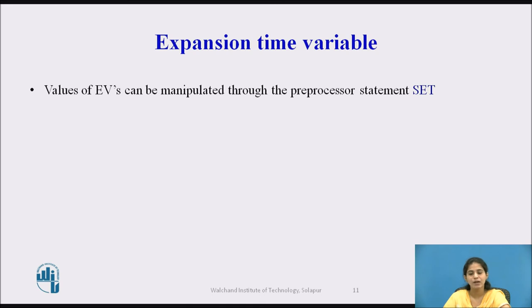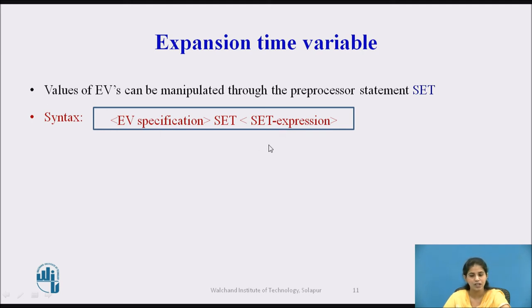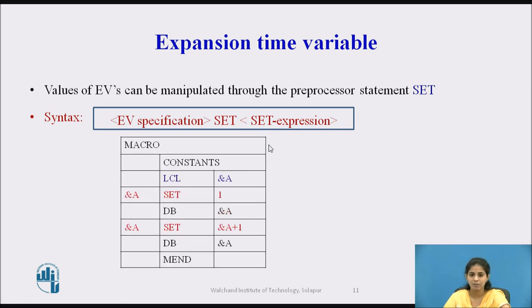The values of expansion time variables can be manipulated through the preprocessor statement SET. The syntax of the SET statement is: EV_specification SET set_expression. The SET statement assigns the value specified in the set expression to the EV specified in the EV specification.